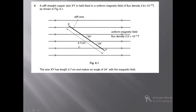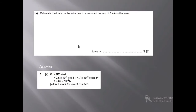The wire XY has length 4.7 cm and makes an angle of 34 degrees with the magnetic field. Part (a): calculate the force on the wire due to a constant current of 5.4 ampere in the wire.